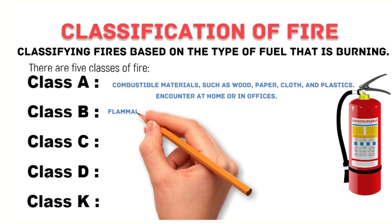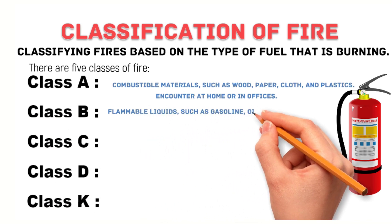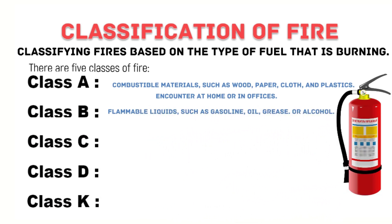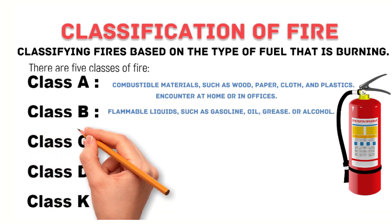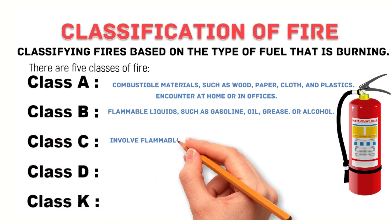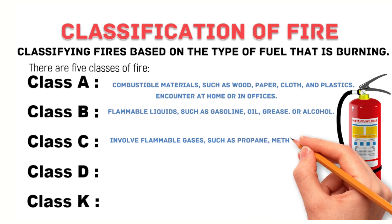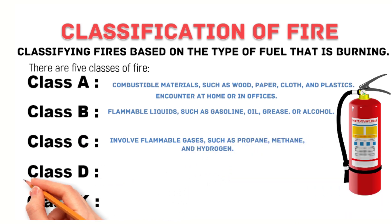Class B fires are fires that involve flammable liquids such as gasoline, oil, grease, or alcohol. These fires can spread rapidly, so it's essential to act quickly and correctly. Class C fires are fires that involve flammable gases such as propane, methane, and hydrogen.